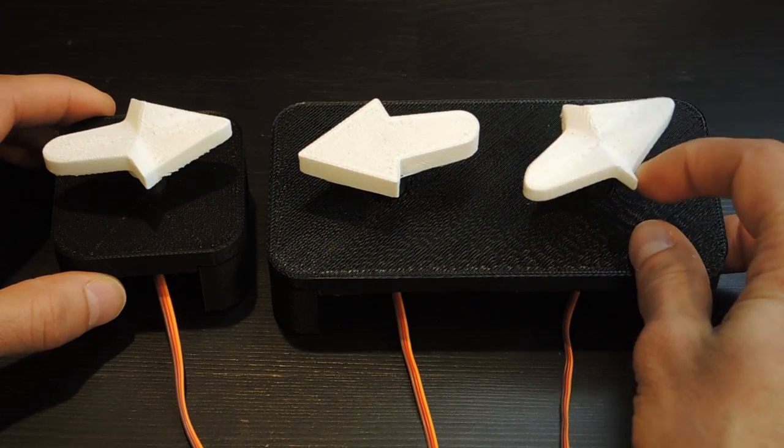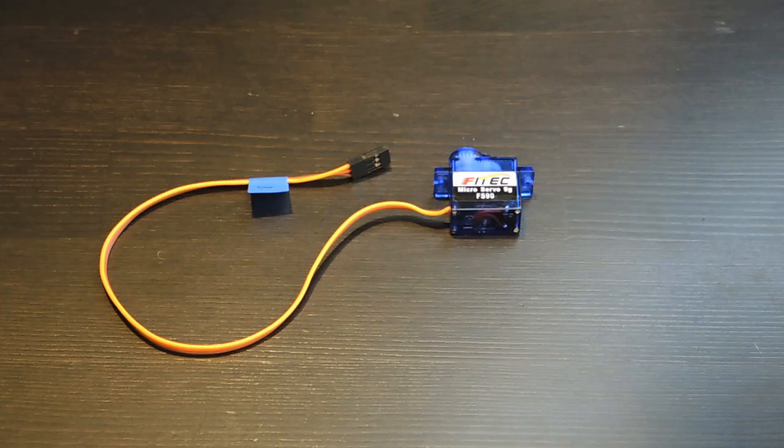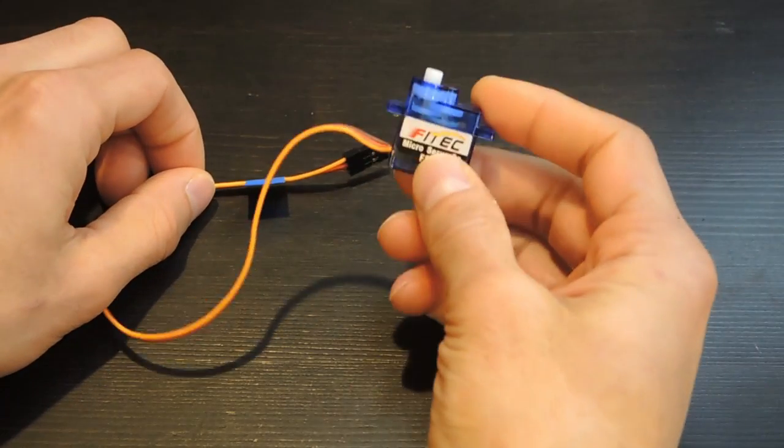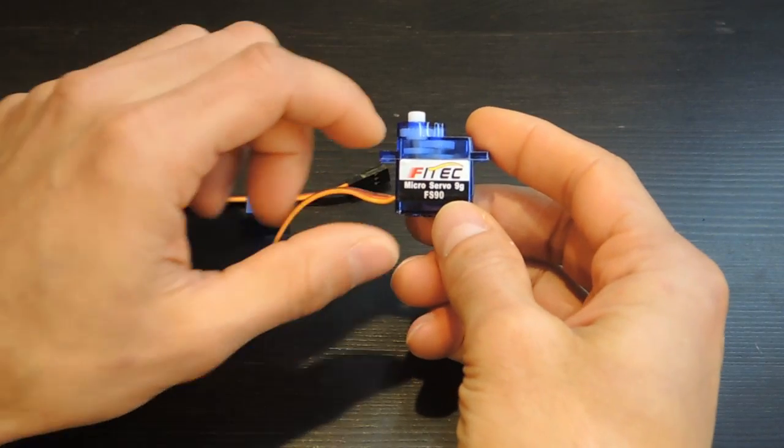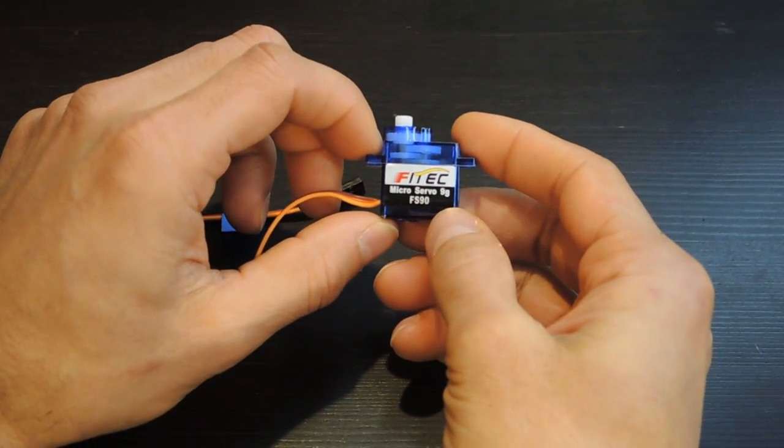Let's start by talking about how I moved the arrows around. To move the arrows around, I used cheap RC servo motors. In this case, I used the Fitek FS90.